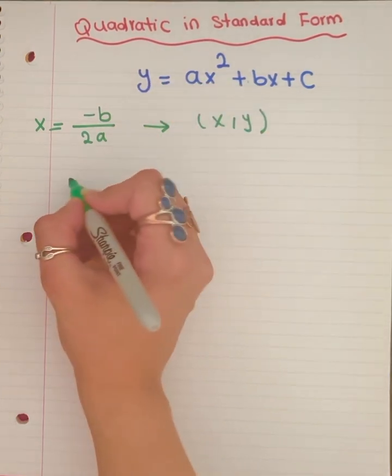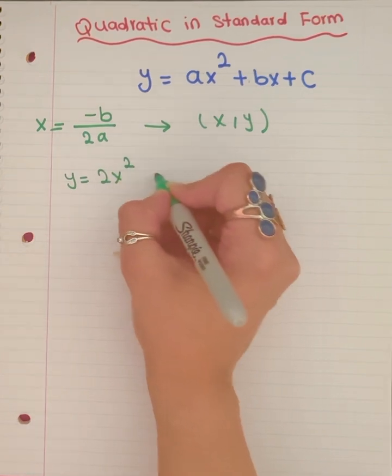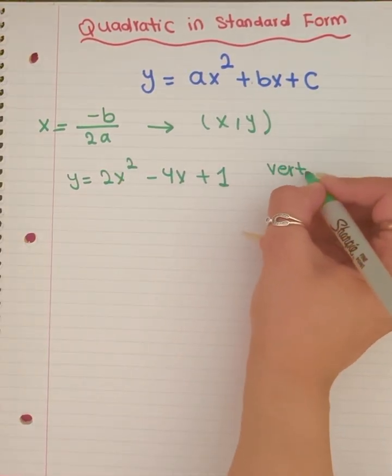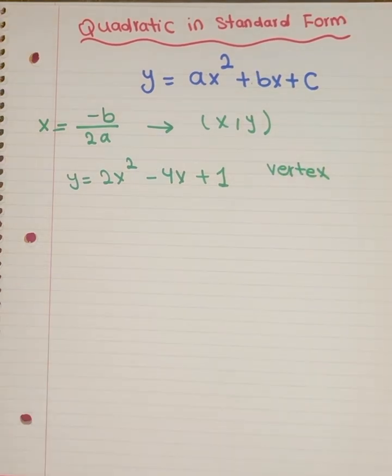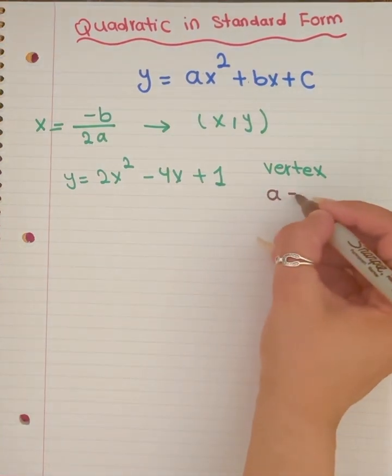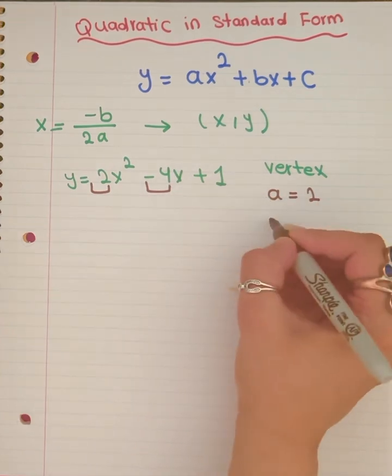So let's give you an example. y equals 2x squared minus 4x plus 1. How can we find the vertex in the standard format? The first thing is you need to define your a and you need to define your b. Our a here is 2 and our b here is negative 4.